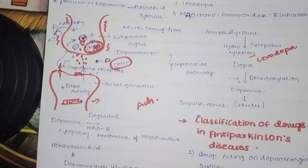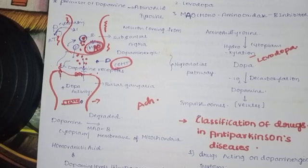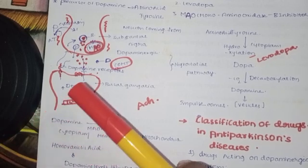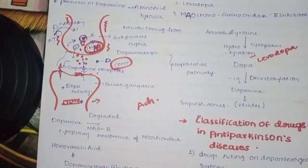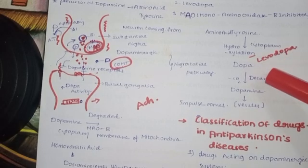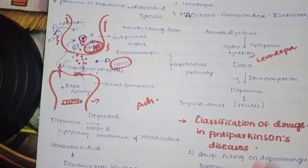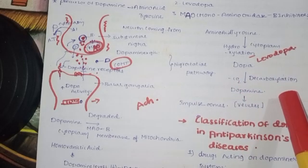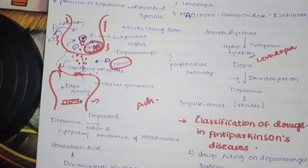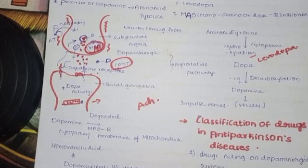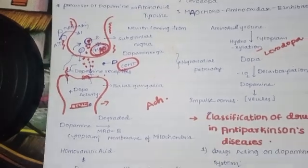The second class of drug is the dopaminergic agonist — dopamine levels are increased. Decarboxylation can be inhibited, converting the precursor. Dopamine can be released, and there are drugs acting on dopaminergic receptors, as well as anti-cholinergic drugs.